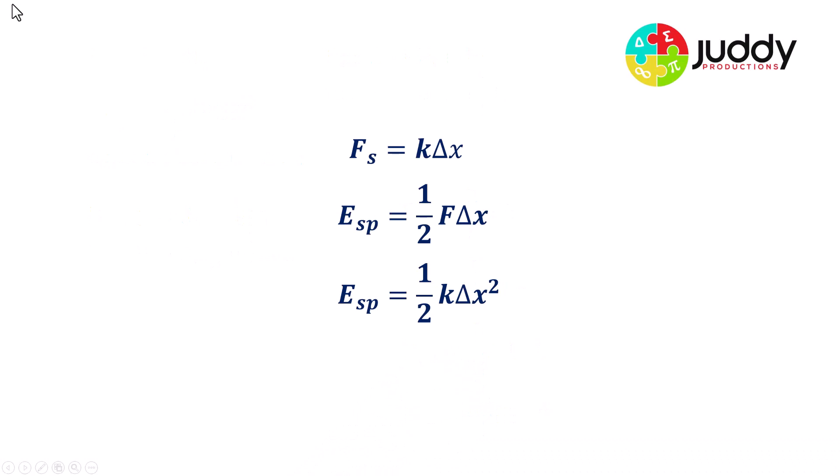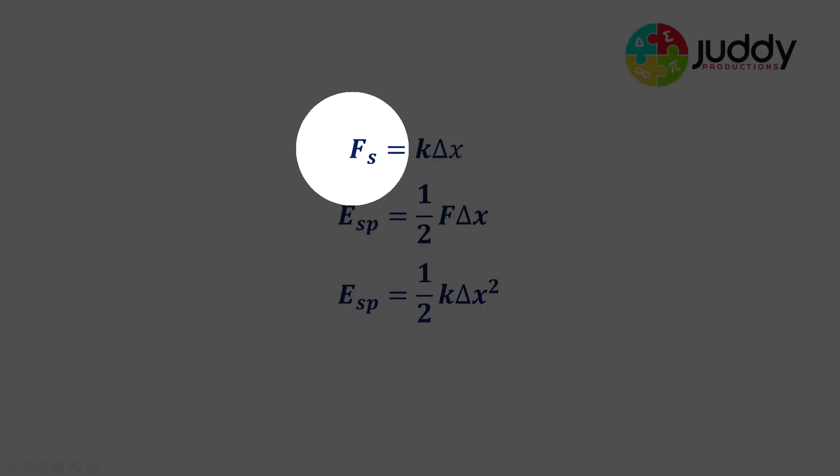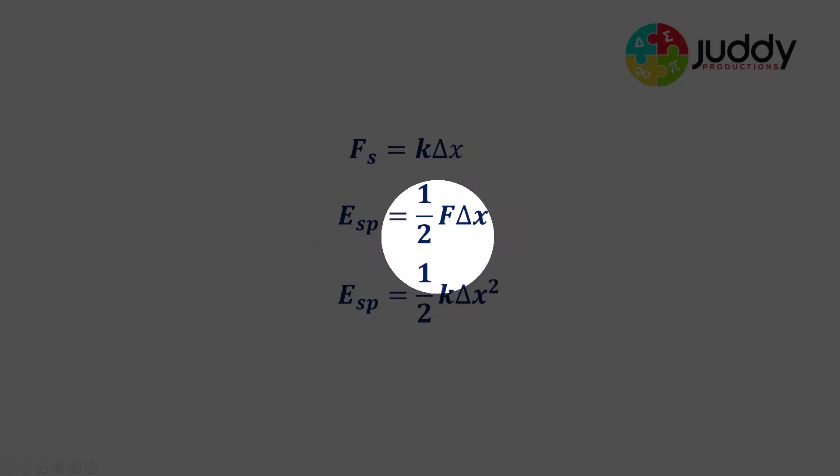So there we have our three derived equations. First of all, the restoring force of a spring is equal to k delta x, that's the magnitude and I've removed the negative sign. The strain potential energy of a spring that's either being compressed or extended can be calculated by a half multiplied by the force multiplied by the extension delta x. And the second variation is the strain potential energy stored in the spring will be equal to half k delta x squared.